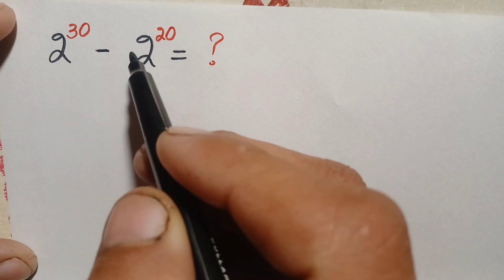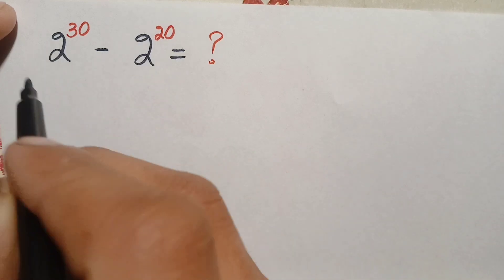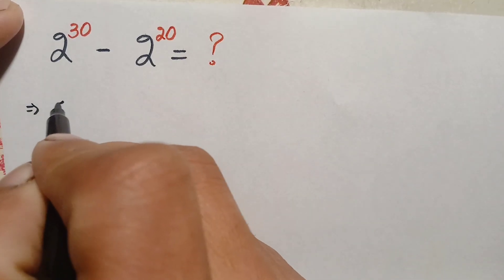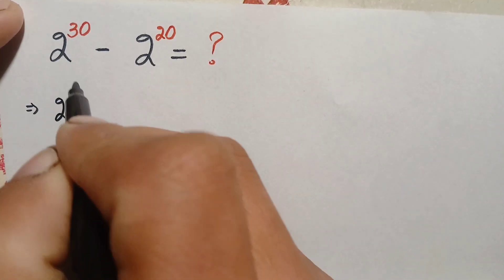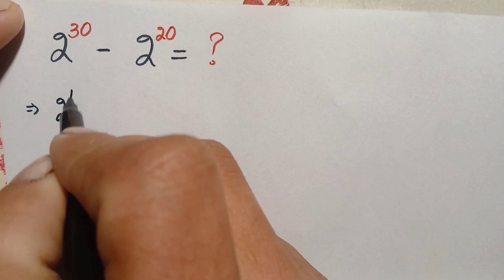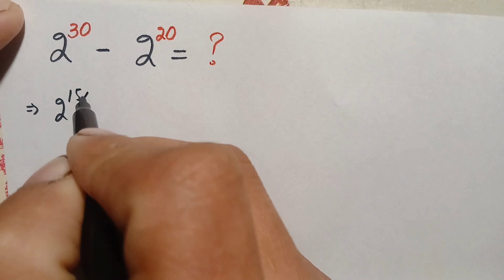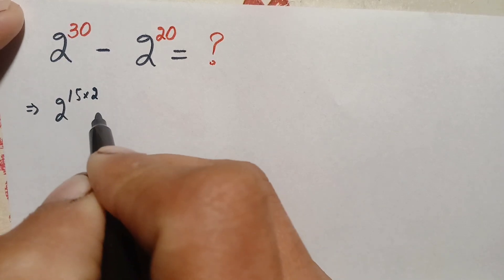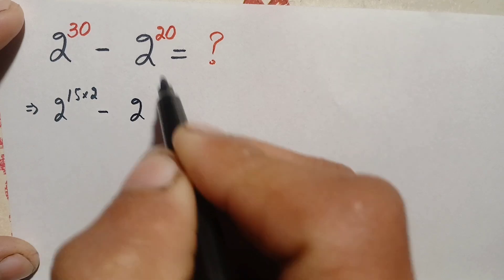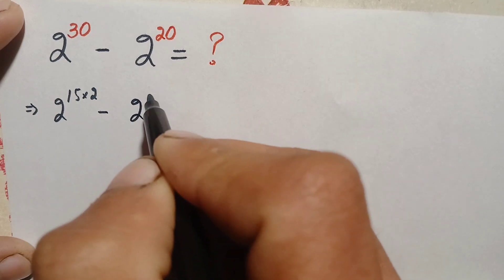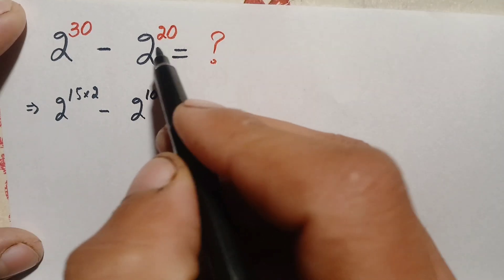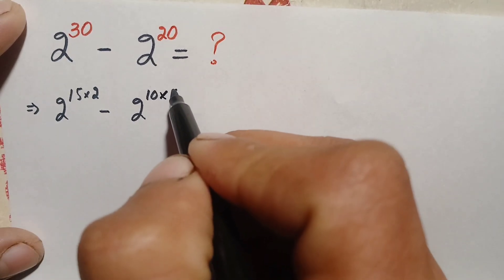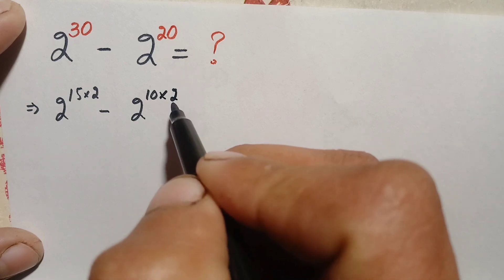Therefore we can write these two powers as: 2 raised to power 30, where we write 30 as 15 times 2, minus 2 raised to power 20, where we write 20 as 10 times 2.